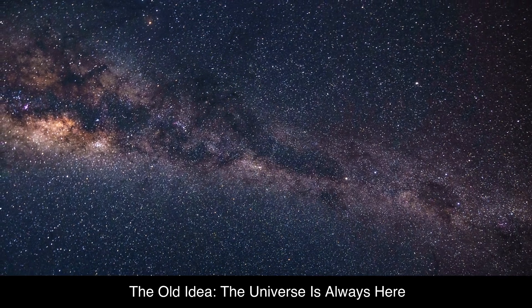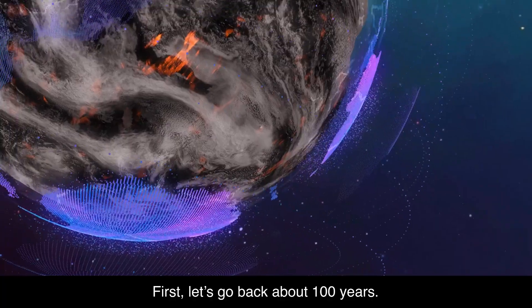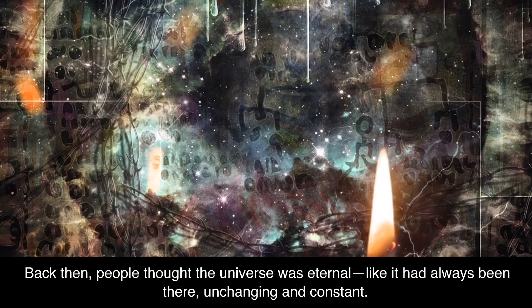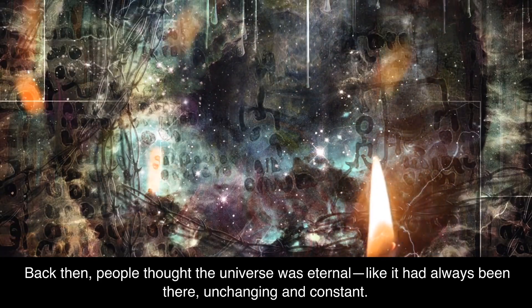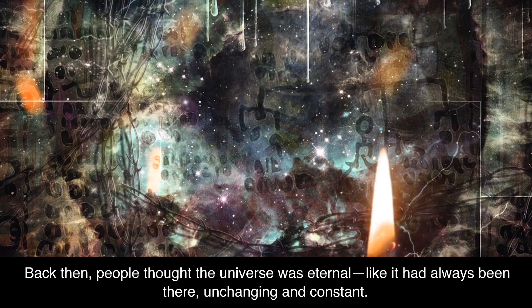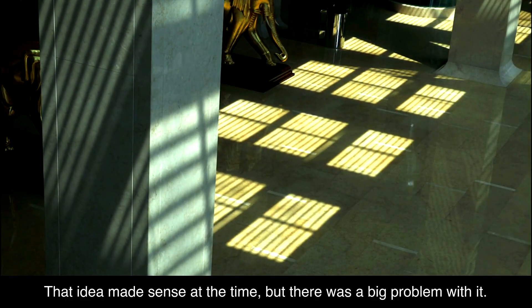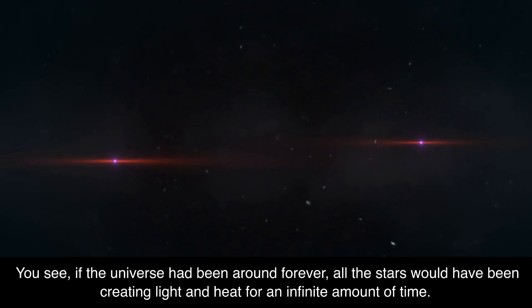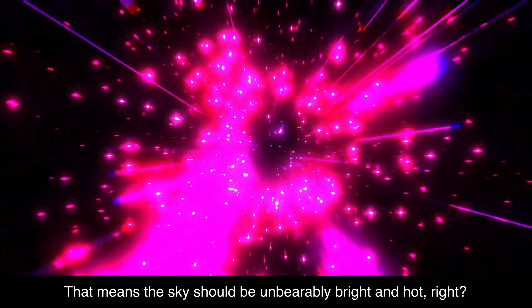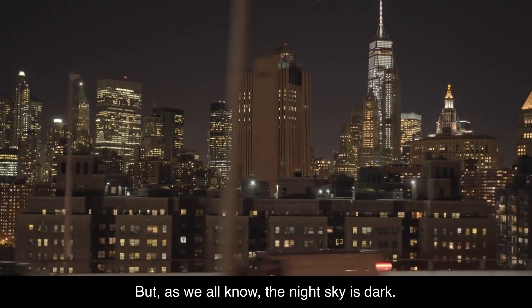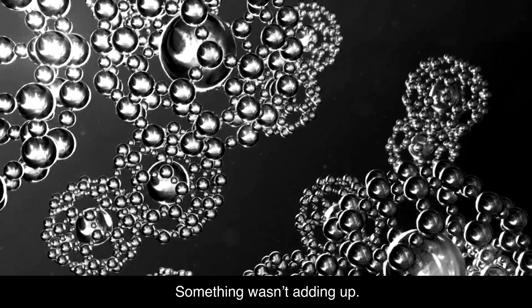The old idea: the universe is always here. First, let's go back about 100 years. Back then, people thought the universe was eternal, like it had always been there, unchanging and constant. That idea made sense at the time, but there was a big problem with it. You see, if the universe had been around forever, all the stars would have been creating light and heat for an infinite amount of time. That means the sky should be unbearably bright and hot, right? But as we all know, the night sky is dark. Something wasn't adding up.